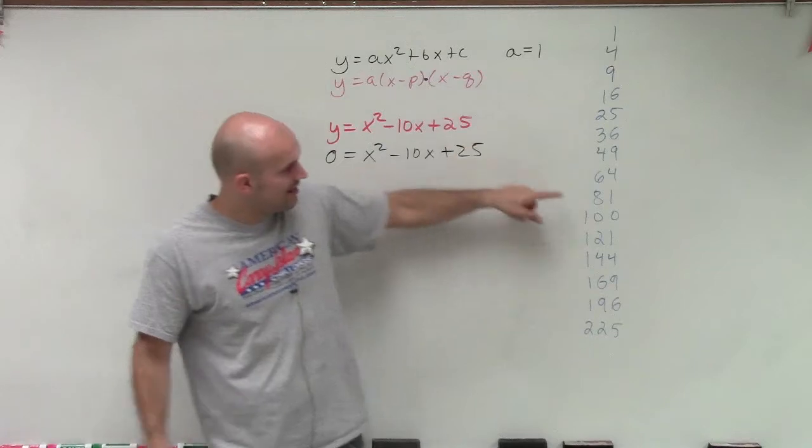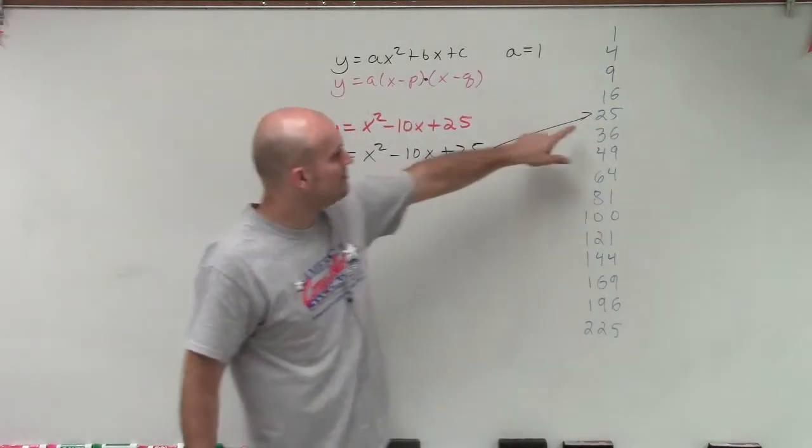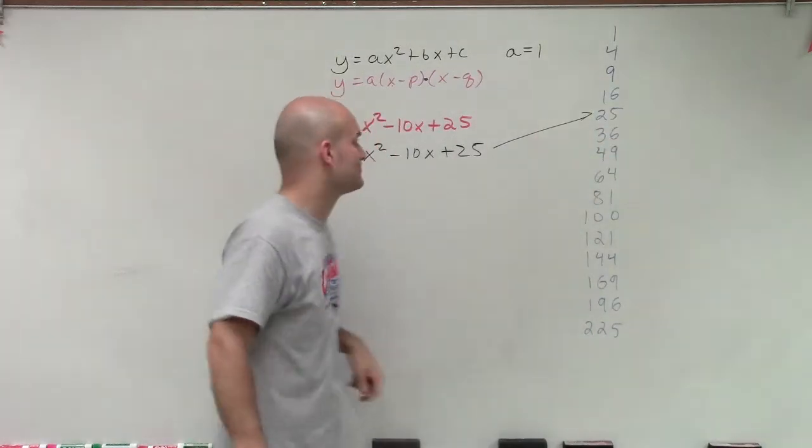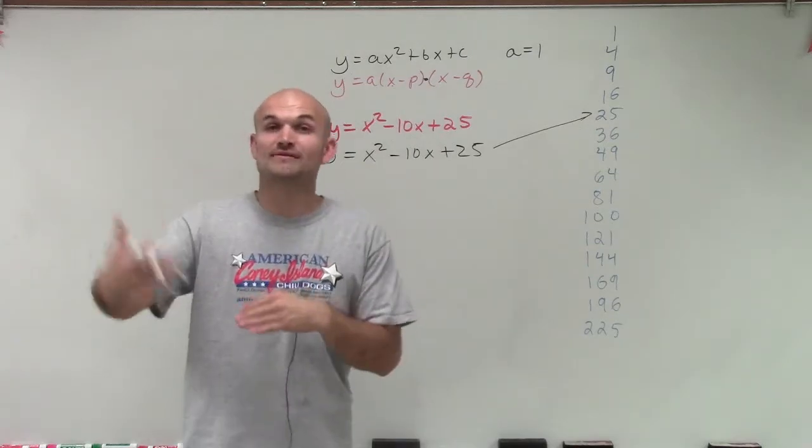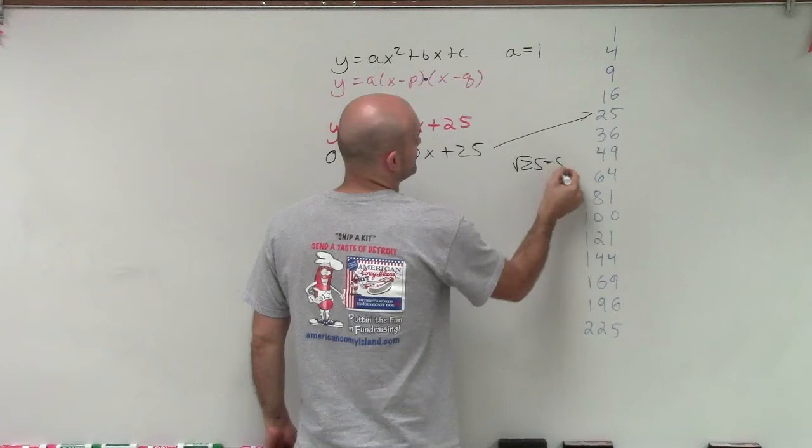Is c a perfect square? You can see that yes, my number 25 is a perfect square because it could either be 5 times 5 or negative 5 times negative 5. Then I take the square root of my c, which is square root of 25, which equals 5.